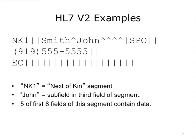Here is an example HL7 version 2 message segment. It starts with NK1, which is the segment name, followed by a pipe character, which is a delimiter that means the end of the field. NK1 stands for next of kin, so this segment denotes a close family member and information about their relationship to the patient. Then comes another pipe indicating an empty field, followed by a last name, Smith, and first name, John, separated by a carat — indicating they are subfields of the named field — along with several more carats indicating empty subfields. After that are various other pipes indicating fields, one of which is a phone number, and many of which are empty. Overall, five of the first eight fields contain data. Bear in mind, this would be one segment in a message of many lines, as part of an admissions message.